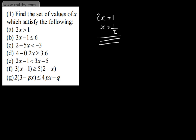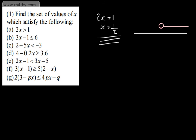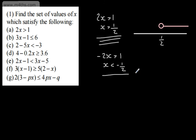You might want to represent this on a number line — you're not always asked to, but you could. We would use an open dot for a strict inequality, meaning it won't include the value of 1 half, but covers all values to the right of 1 half on the number line. Just as an aside, if this had been negative 2x greater than 1, we would divide both sides by negative 2 and change the sign over.